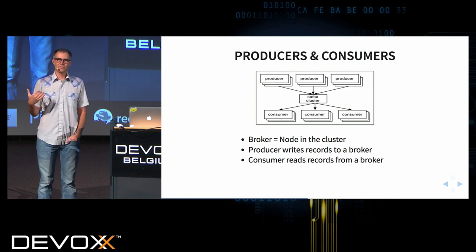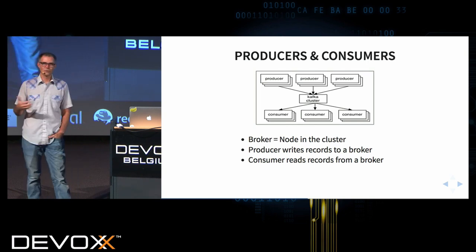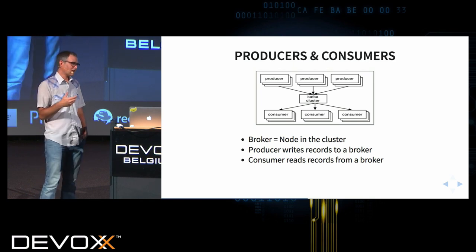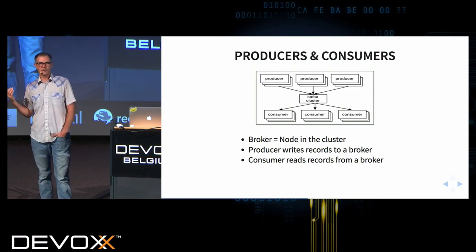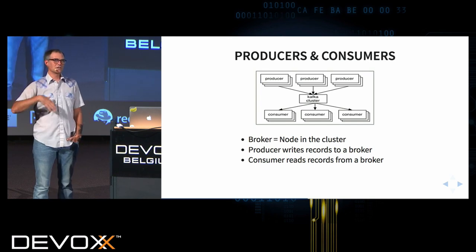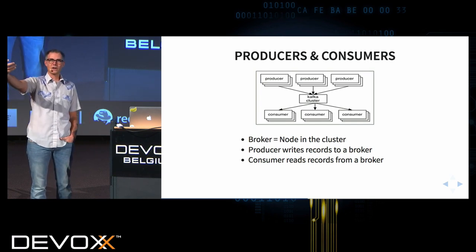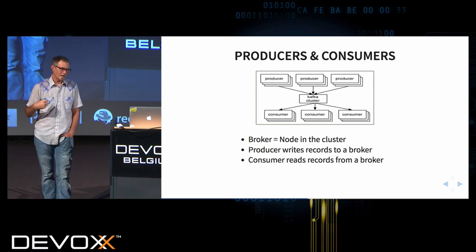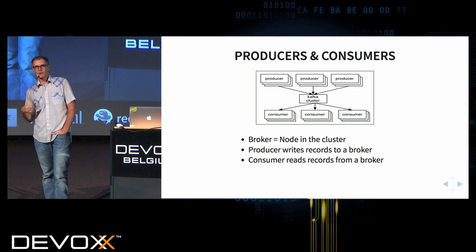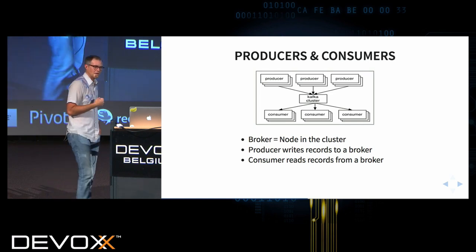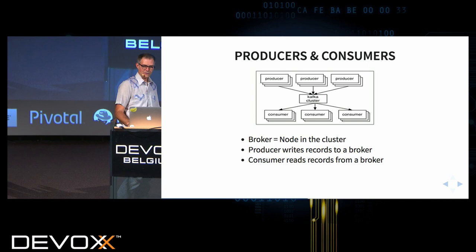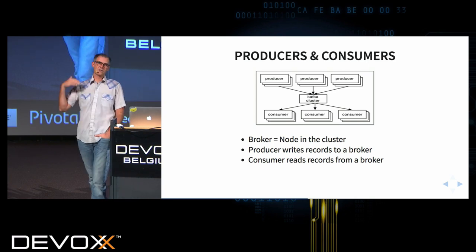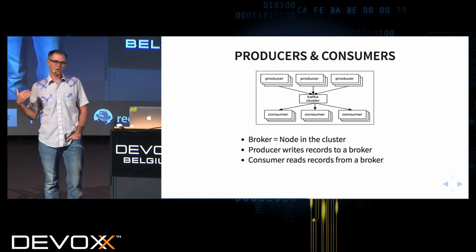I was a bit surprised coming from the reactive world where we want everything to be push-based. It turns out Kafka doesn't really do push. The way it works is your client will actually ask a broker: do you have any records for me? So it's actually polling — reading records from the broker instead of being pushed those records. We'll learn in a bit why Kafka does that polling read instead of a push.